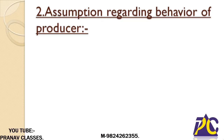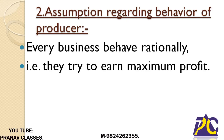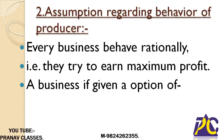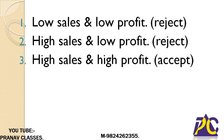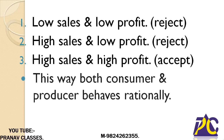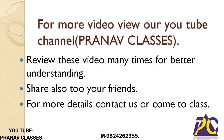The next assumption is regarding behavior of a producer. It is assumed that every businessman behaves rationally — that is, they try to earn maximum profit. If given options, a businessman will reject low sales and low profit, and also reject high sales and low profit. Therefore, businessmen will always opt for high sales and high profit. This is how both consumer and producer behave rationally.